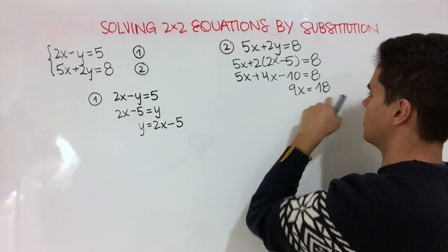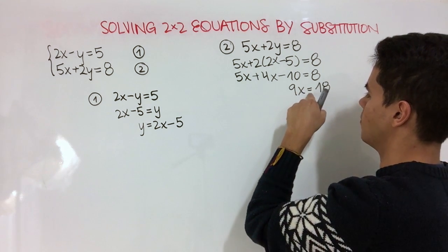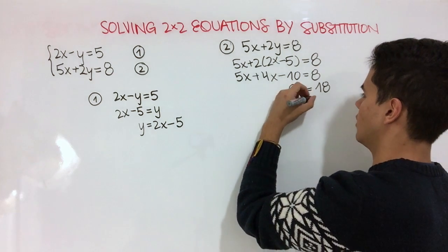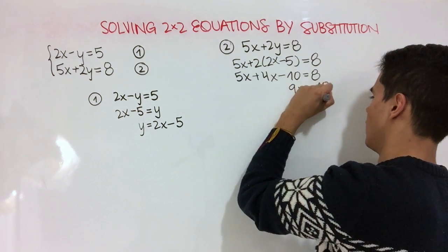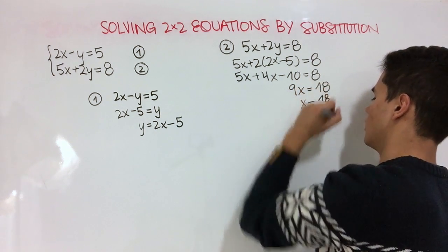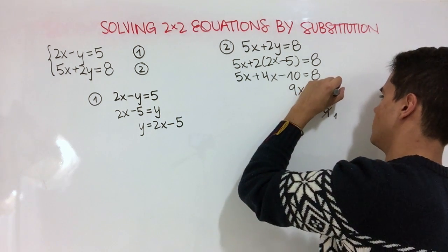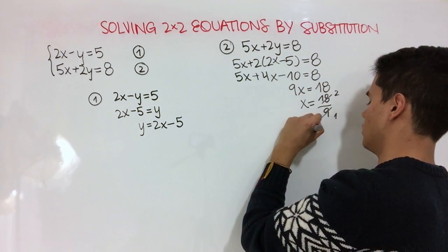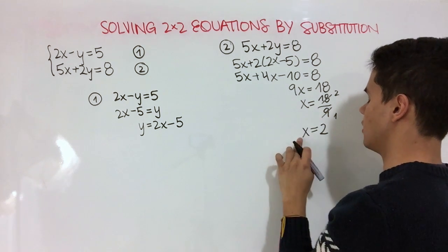Now we're going to divide both sides by 9, so we get rid of this 9 that is with our x. So x is equal to 18 over 9. This 9 will cancel out with this 18, becoming a 2. So x is equal to 2.